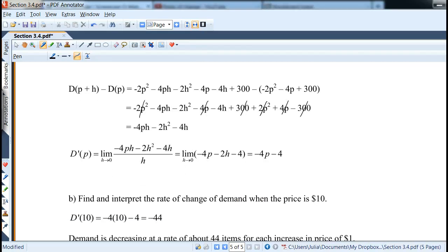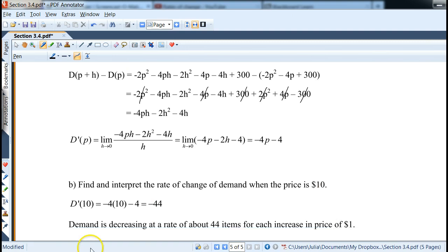Now find and interpret the rate of change of demand when the price is $10. Well, you can simply plug in p equals 10. So we'll get negative 44. What does that actually mean for us? Well, the demand is decreasing, because it's negative, at a rate of about 44 items for each increase in price of $1. Now this only works on prices $10. So basically, if we switch from 10 to 11, we know this is how much demand would be decreasing.